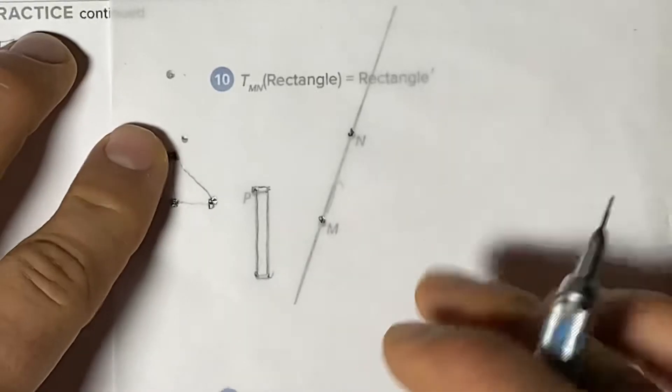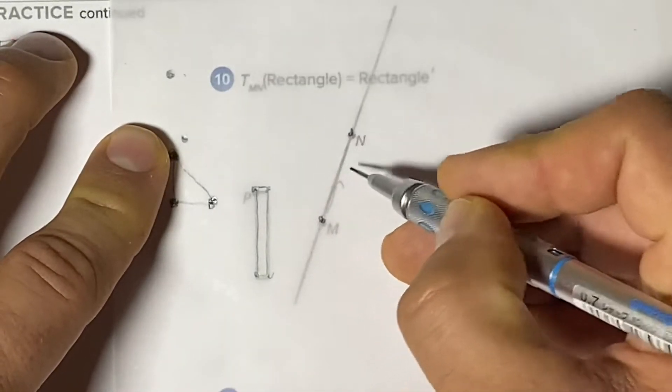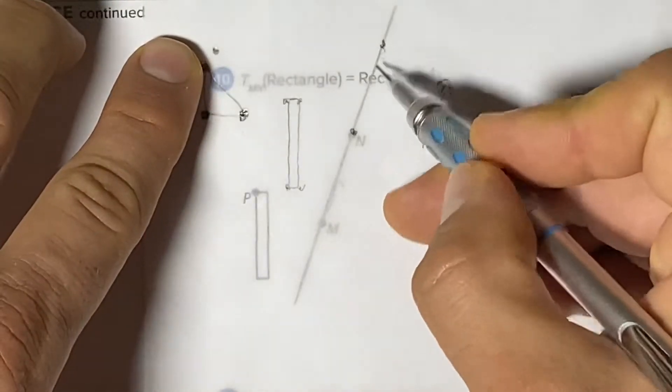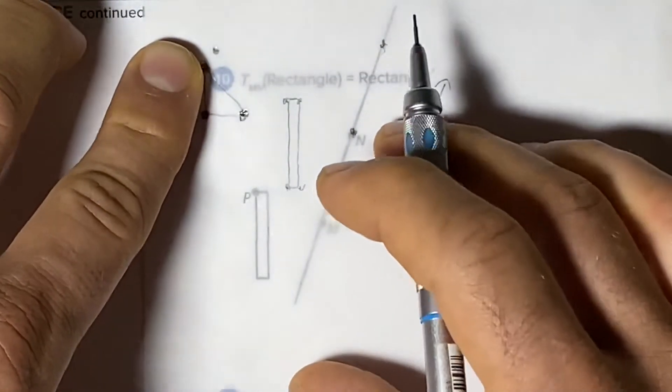So we're going to go from M towards N in this direction. We slide it up. We make sure both points stay on the guideline.